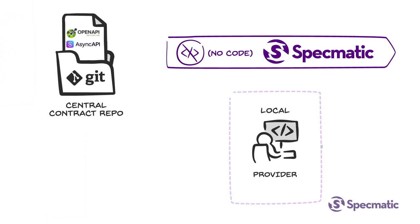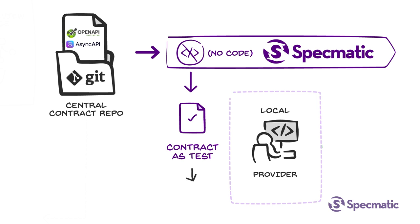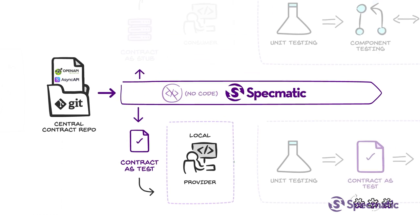Similarly, the providers would refer to the exact same specs from the central contract repo and use Specmatic to generate contract tests for their service. This will validate if their implementation adheres to the spec or not.